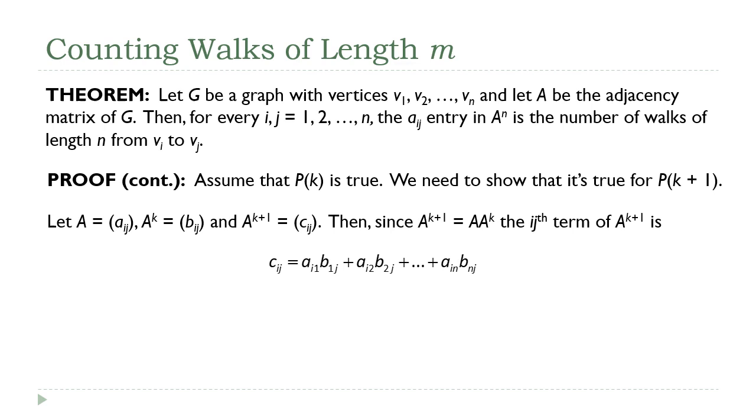Okay, so again, our definition of matrix multiplication at the individual entry level. C sub ij is equal to this expression here. I'm taking the elements of A. You notice that the first index stays constant for the A's. So I'm looking at the ith row of A. And the second index for the B's stays constant. So I'm looking at the jth column of that A to the k matrix.